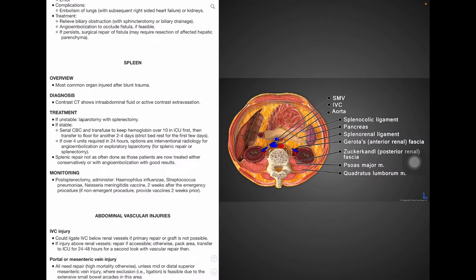Spleen. As mentioned earlier, the spleen is the most common organ injured after blunt trauma. A contrast CT will show intra-abdominal fluid or active contrast extravasation surrounding the area. Unstable patients undergo laparotomy with splenectomy. Stable patients are in the ICU with serial CBC and transfusion to keep hemoglobin over 10. And angioembolization or laparotomy, followed by splenic repair or splenectomy by interventional radiology is indicated in those patients requiring more than four units in 24 hours. Nowadays, splenic repair is not commonly performed because patients can be treated conservatively or with angioembolization alone. Post-splenectomy patients need to receive Haemophilus influenzae, Streptococcus pneumoniae, and Neisseria meningitidis vaccines two weeks after the emergency operation. If surgery was not emergent, then the vaccines need to be given two weeks beforehand.